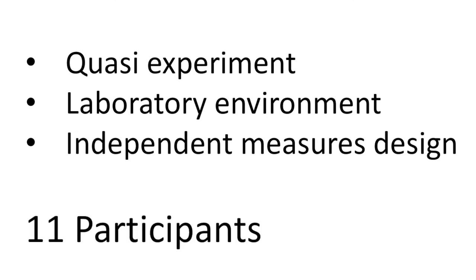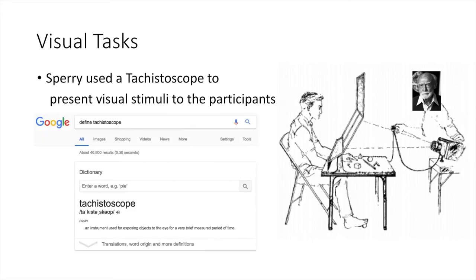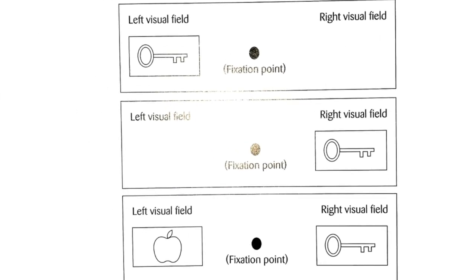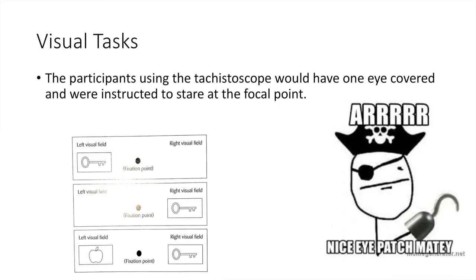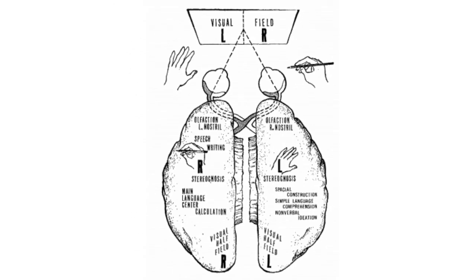There's no experiment without participants, so Sperry used 11 participants. As part of his procedure for visual tasks, Sperry used a tachistoscope to present visual stimuli to the participants — an instrument used for exposing objects to the eye for a very brief, measured period of time. The tachistoscope has a focal point in the middle and two areas where stimuli are presented. Participants had one eye covered and were instructed to stare at the focal point, with all visual stimuli presented for only 0.1 seconds — too quick for eye movements to cause visual information to enter both visual fields. In the tactile test, participants put their hands under the tachistoscope to reach objects but not see them. Objects placed in the right hand are processed in the left hemisphere, and vice versa.